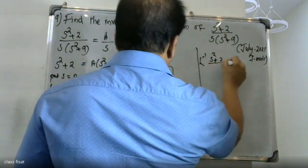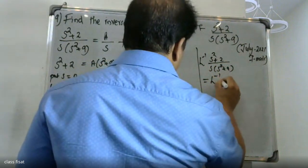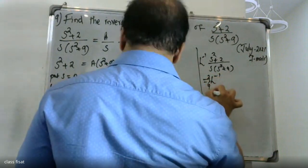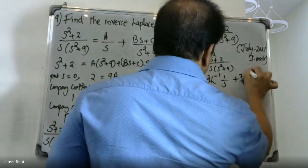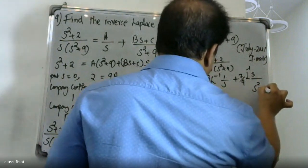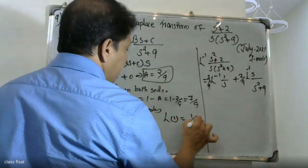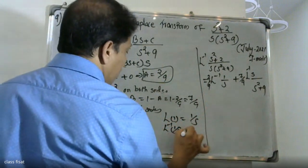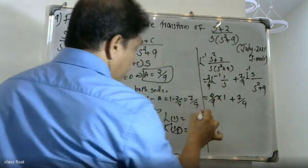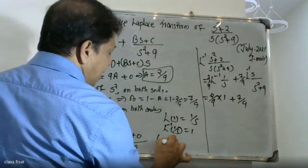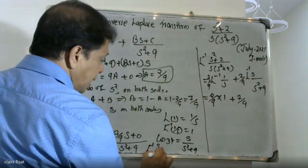Taking the inverse Laplace transform: L⁻¹ of (S² + 2) / (S(S² + 9)) equals (2/9) L⁻¹(1/S) plus (7/9) L⁻¹(S / (S² + 9)). Since L⁻¹(1/S) = 1 and L⁻¹(S/(S² + 9)) = cos(3t), the answer is 2/9 plus (7/9) cos(3t).